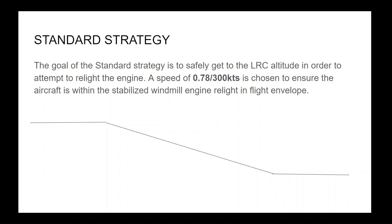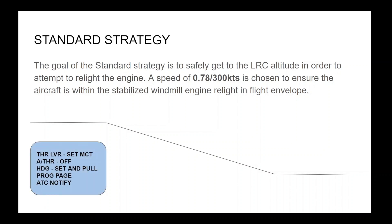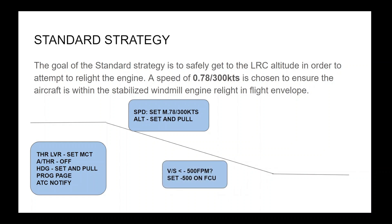The standard strategy is as follows: thrust lever — set MCT; auto thrust — off; heading — set and pull; find the engine out recovery altitude on the PROG page; notify ATC; then set and pull the speed and pull the altitude knob for open descent. If at any time the vertical speed goes below 500 feet per minute, adjust this using the VS knob. Once at the selected altitude, manage speed.